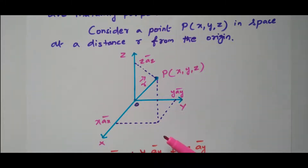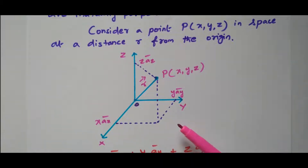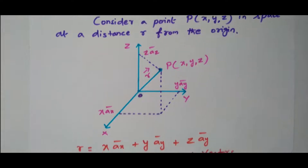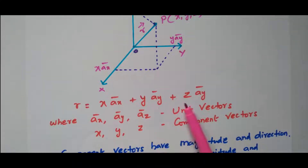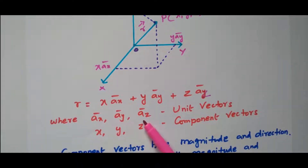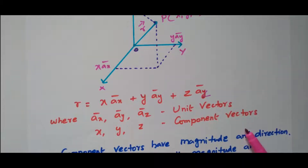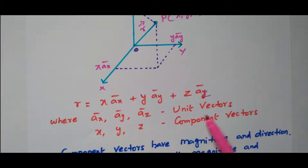This is very similar to the graph we draw with x and y axes, but here we have x, y, and z axes, all measured in terms of length. So the r vector can be represented as x·ax + y·ay + z·az. Here ax, ay, az are the unit vectors, and x, y, z are the component vectors. In the Cartesian or rectangular coordinate system, we represent x, y, z with corresponding unit vectors ax, ay, az.